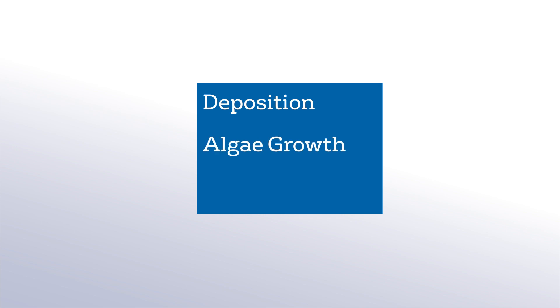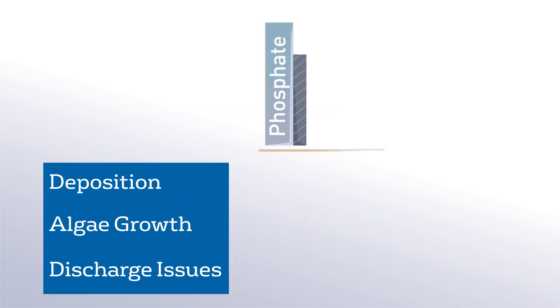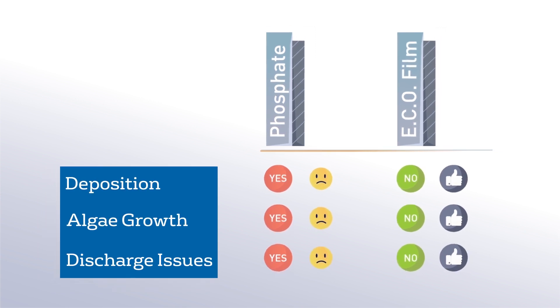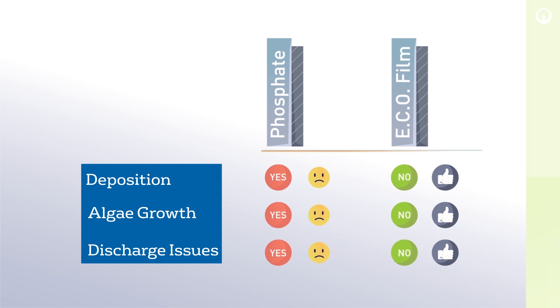Ecofilm solves costly operational, environmental, and social challenges by eliminating the risk of phosphate deposition, reducing a key algae nutrient, and eliminating phosphate from the wastewater or discharge stream.